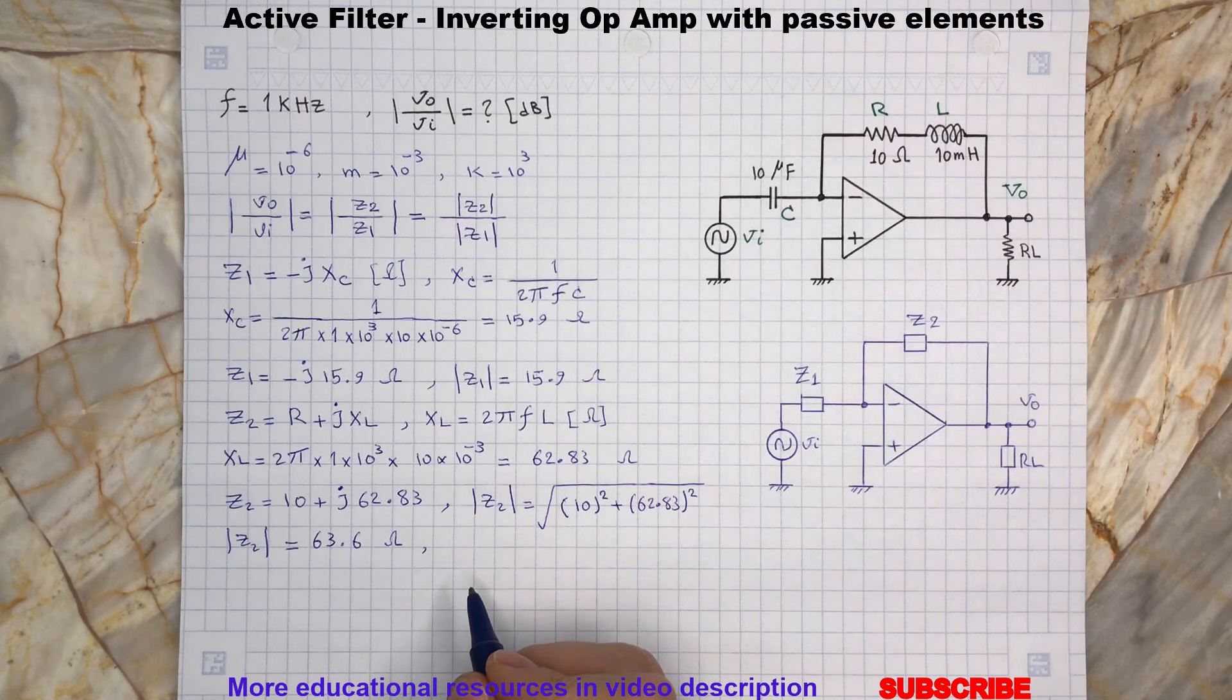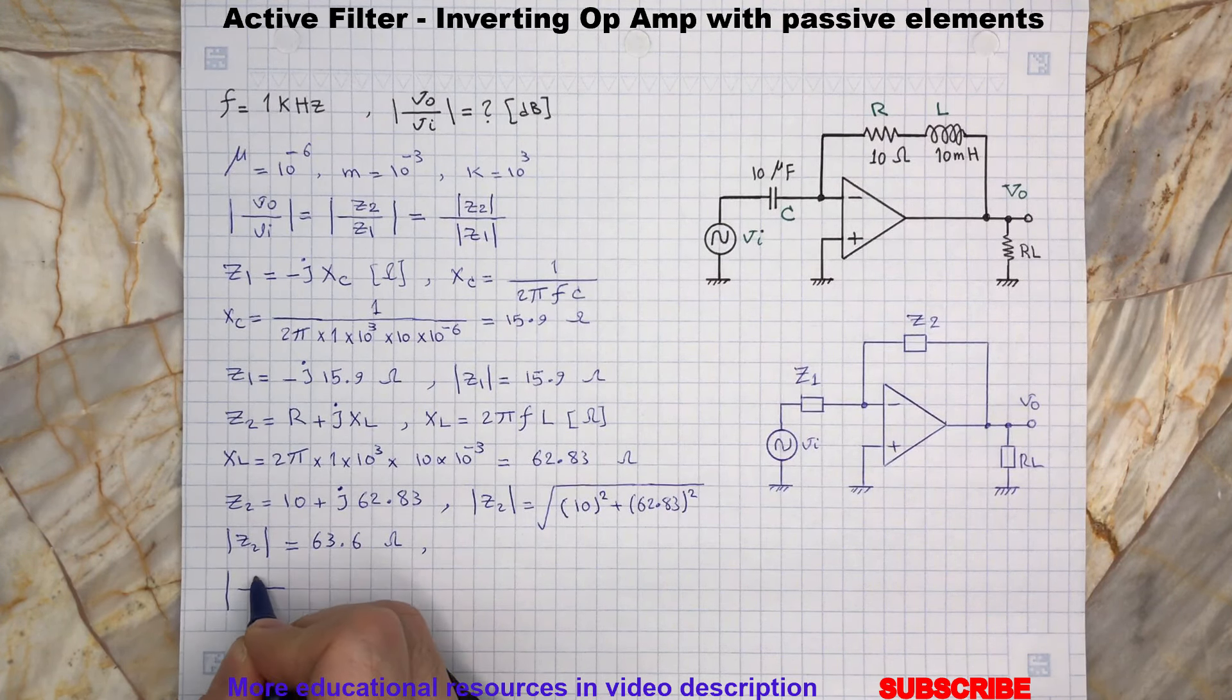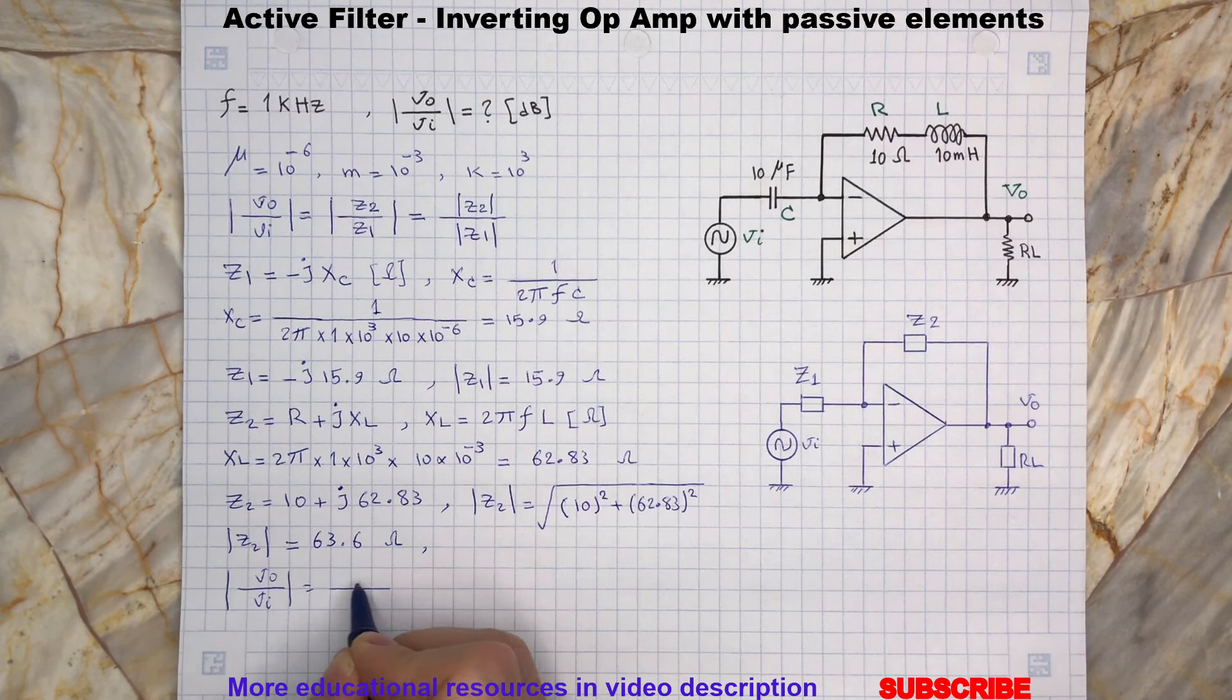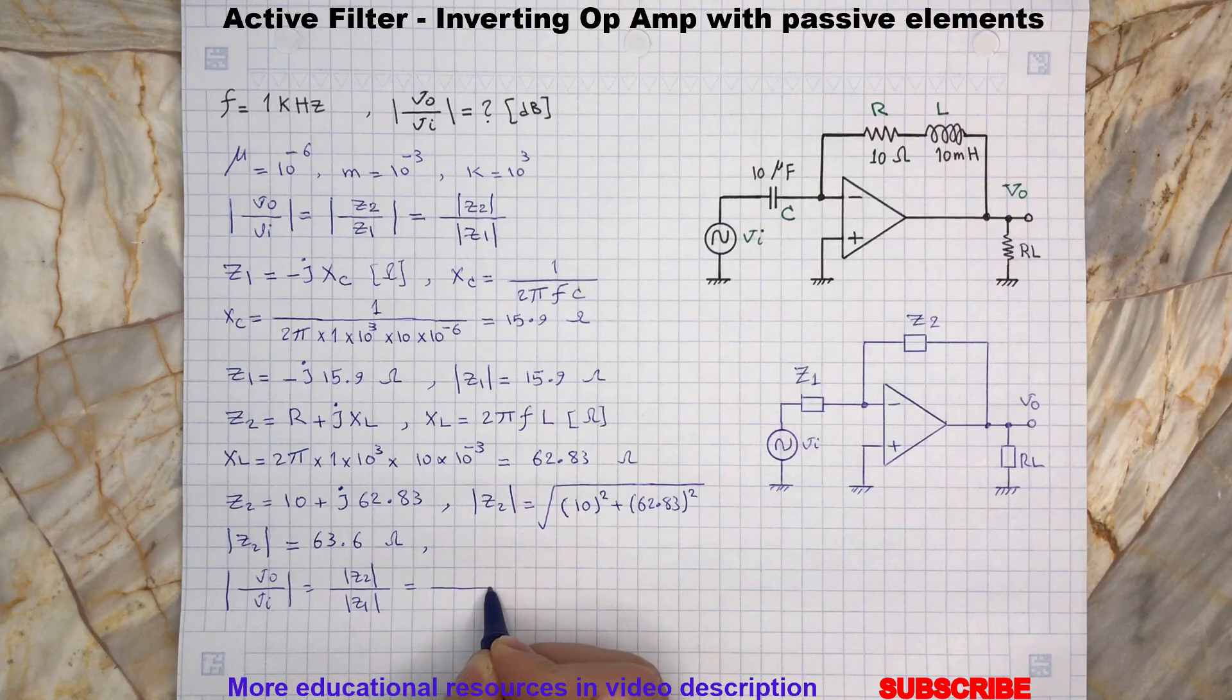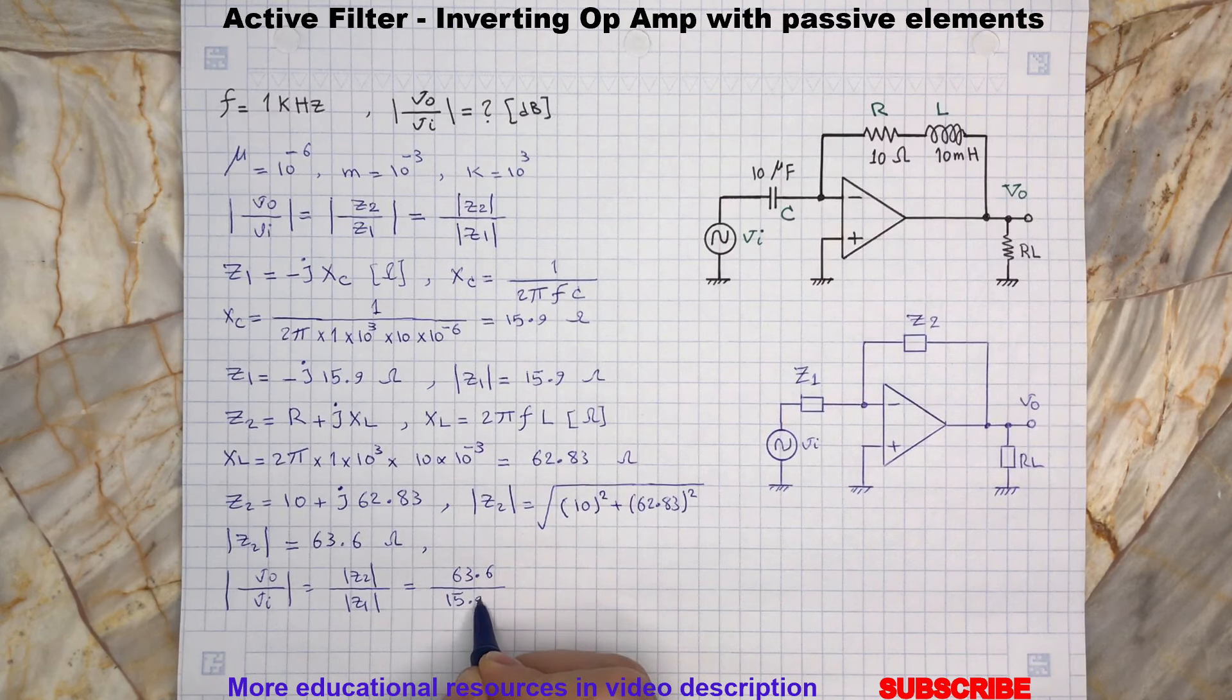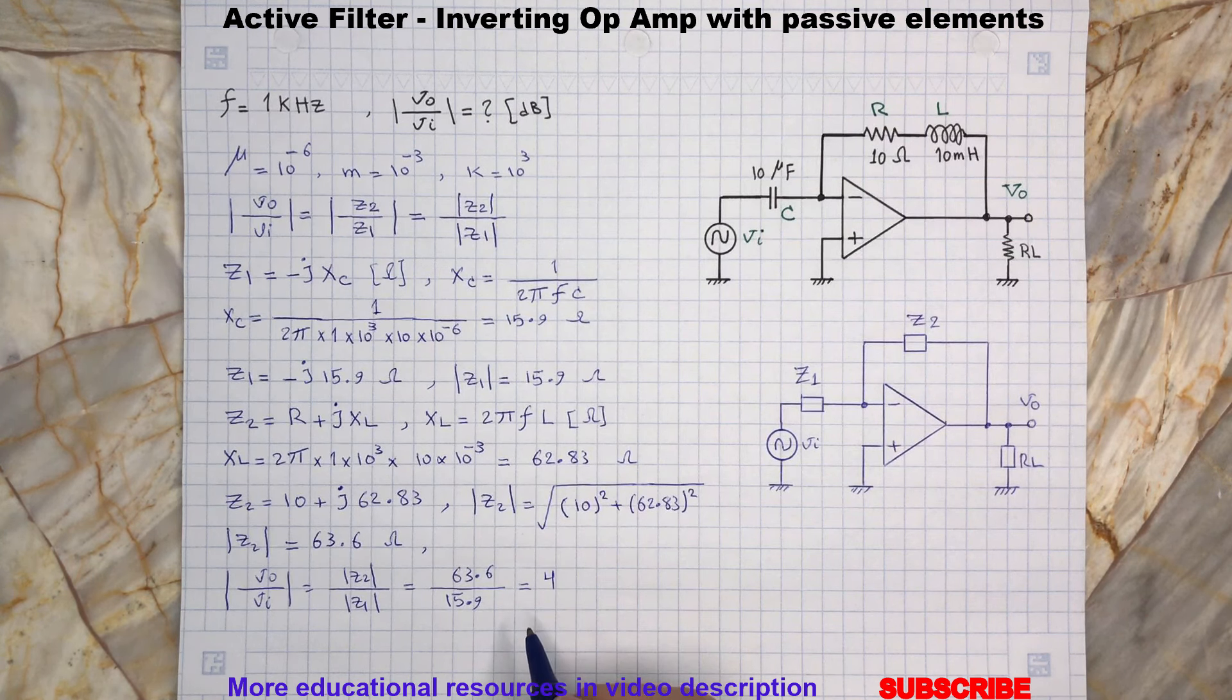Now we can plug Z2 and Z1 in the circuit voltage gain formula. And finally, the voltage gain in decibel is defined by 20 log of the magnitude ratio.